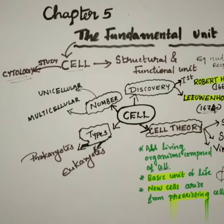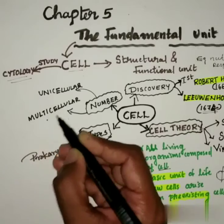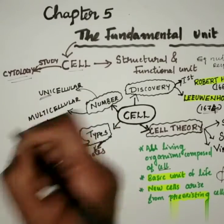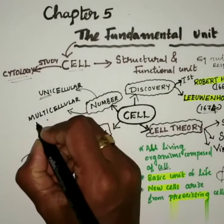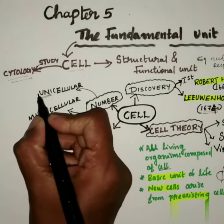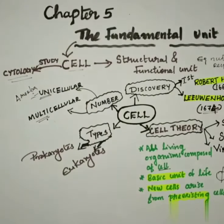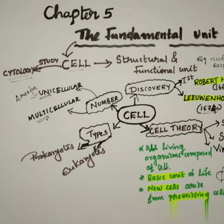According to the number of cells, organisms are divided into unicellular and multicellular. Single-celled organisms are known as unicellular organisms, and organisms with more than one cell are known as multicellular organisms. Examples of unicellular organisms: amoeba, paramecium, bacteria, etc. Multicellular organisms may be animals, plants, etc. These multicellular organisms show division of labor, meaning different types of cells carry out different functions in their body.